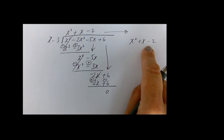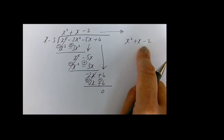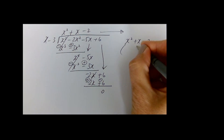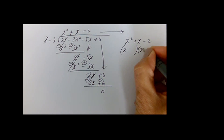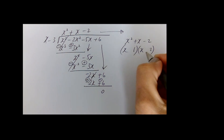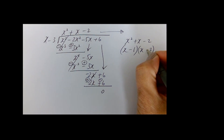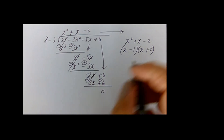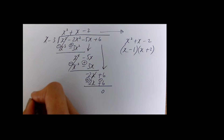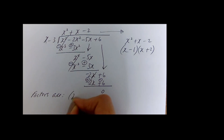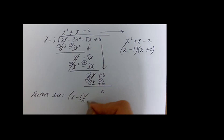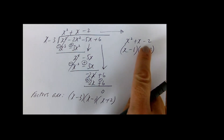Now I factorize x² plus x minus 2: x times x, factors of minus 2 that add to give plus 1 would be minus 1 and plus 2. So the three factors are x minus 3, x minus 1, and x plus 2.